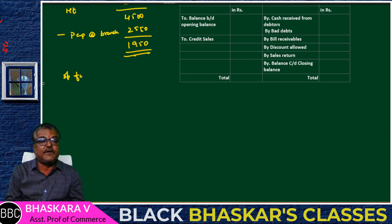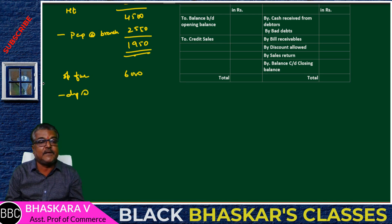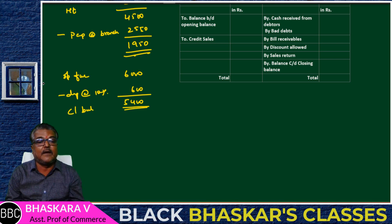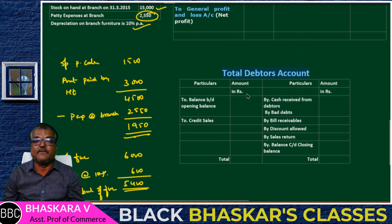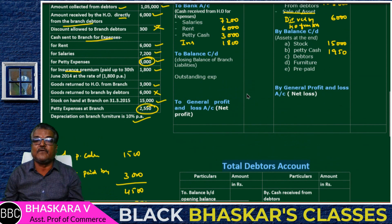Opening furniture is 6,000. Less depreciation at 10% — that is 600. So closing balance of furniture is 5,400.